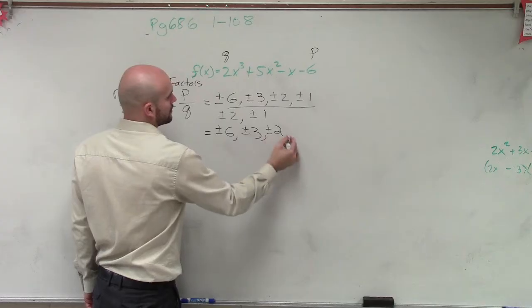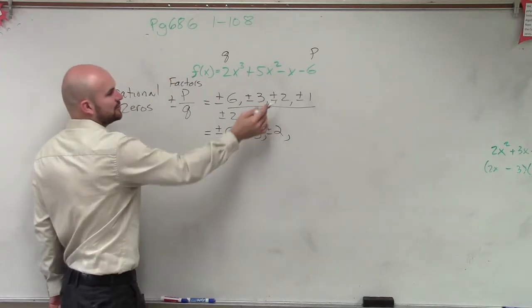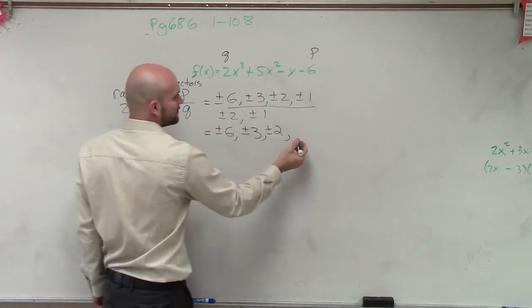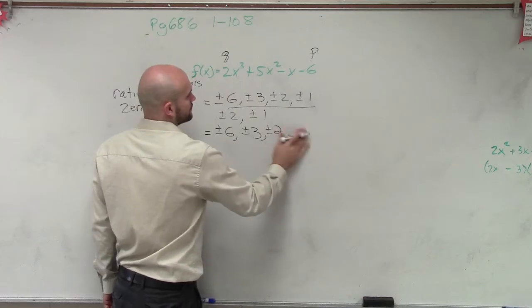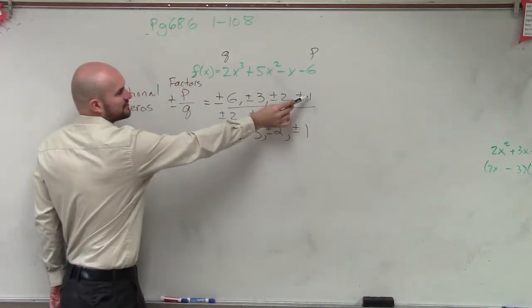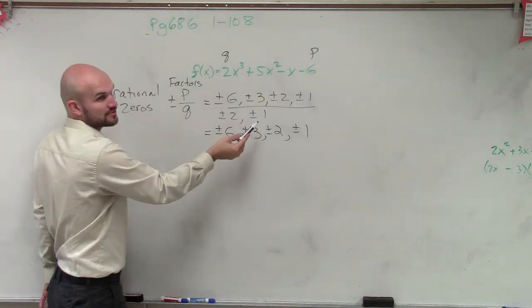So plus or minus 2, comma, if I did 2 over 2, that gives me 1. And then that means I don't have to do 1 over 1 again, because I know that answer is 1, right?